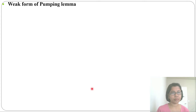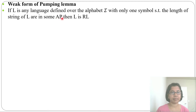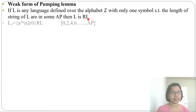Next, the weak form of the pumping lemma: if L is any language defined over an alphabet with only one symbol, such that the lengths of the strings in L form an arithmetic progression (AP), then L is a regular language. Let's look at some examples.